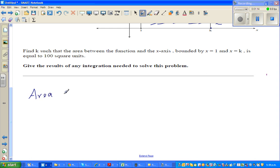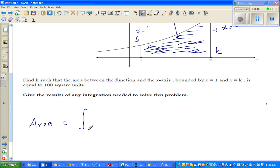So area is definite integration from 1 to k of the function 4e to the power 0.2x dx. Using definite integration, you don't have to put the constant.